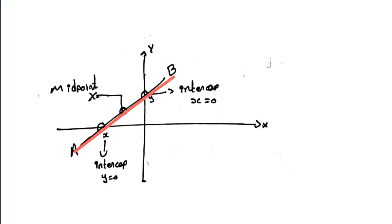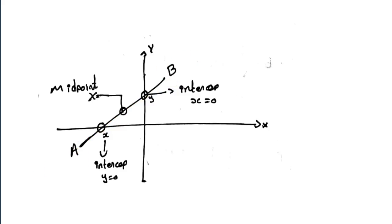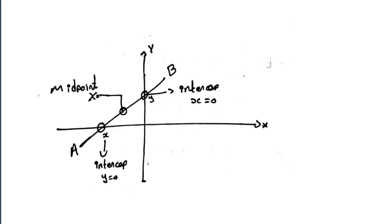Now, we have a line. Here, you have a line. You have a point. This is a point. This point connects with x and y on the x-axis. That is the intercept. This intercept is the same as y equals the intercept. This is the midpoint, and this is the center point.